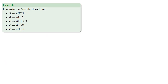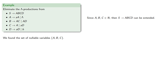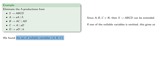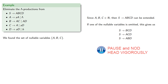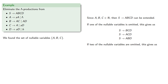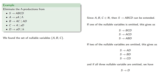Let's eliminate the lambda productions from our grammar. We found the nullable variables {A, B, C}. Since A, B, and C are nullable, the first production S produces ABCD can be extended. Omitting one nullable variable gives S produces BCD, S produces ACD, and S produces ABD. Omitting two nullable variables gives additional rules, and omitting all three nullable variables gives S produces D. We can extend our productions by including these additional rules.